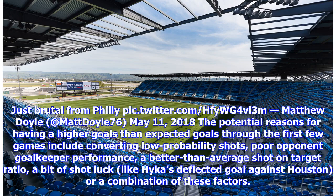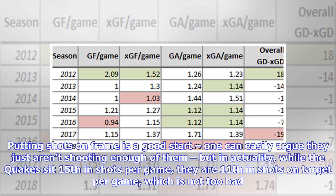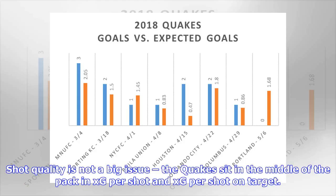The potential reasons for having higher goals than expected goals through the first few games include converting low-probability shots, poor opponent goalkeeper performance, a better-than-average shot-on-target ratio, a bit of shot luck like Hike's deflected goal against Houston, or a combination of these factors. The combination of factors is the most likely reason here. The Quakes currently are fifth in the league in percentage of shots on target with 38.6%. Putting shots on frame is a good start, and one can easily argue they just aren't shooting enough of them — but in actuality, while the Quakes sit 15th in shots per game, they are 11th in shots on target per game, which is not too bad. Shot quality is not a big issue; the Quakes sit in the middle of the pack in xG per shot and xG per shot on target.